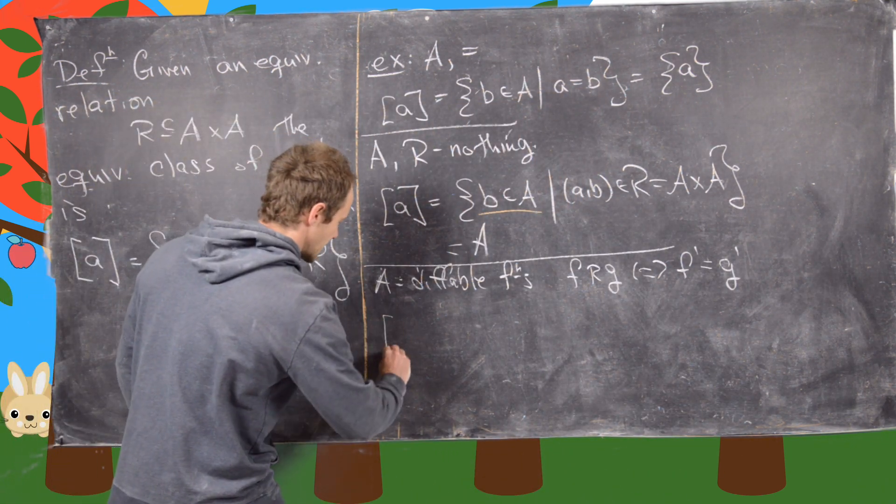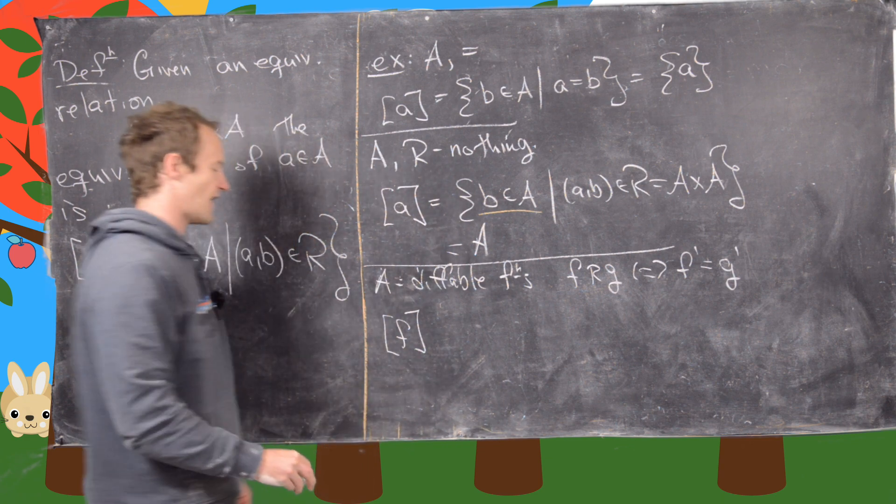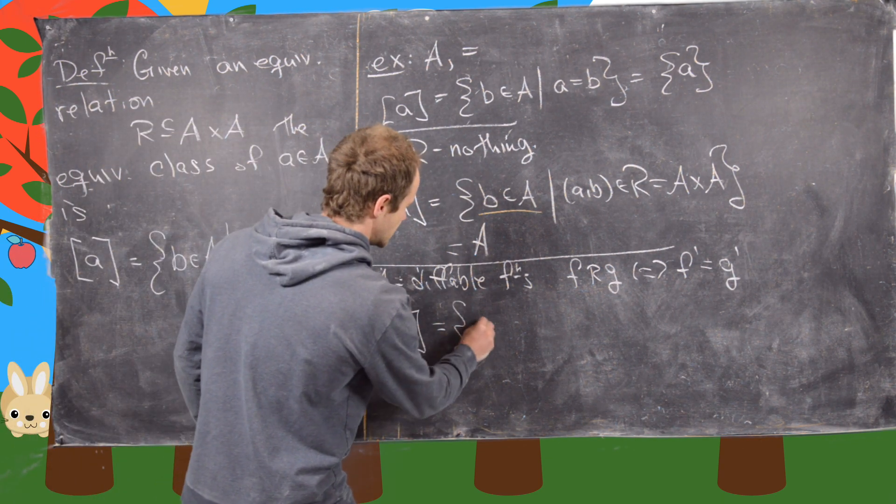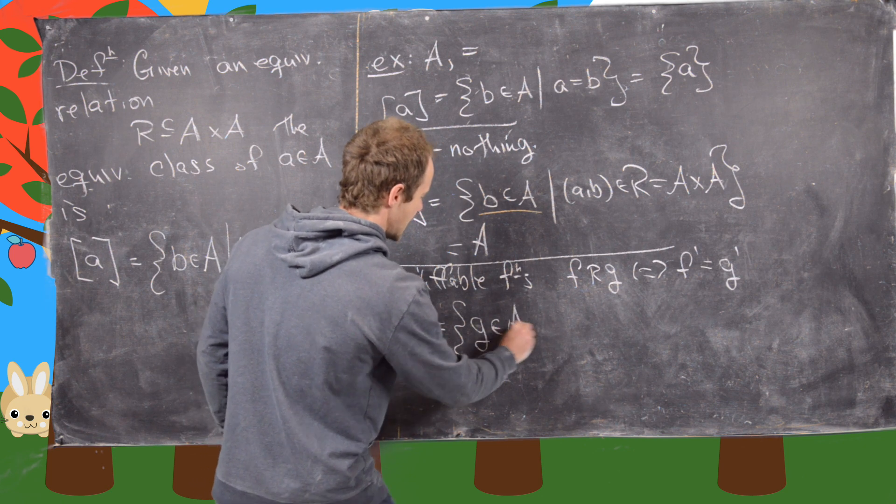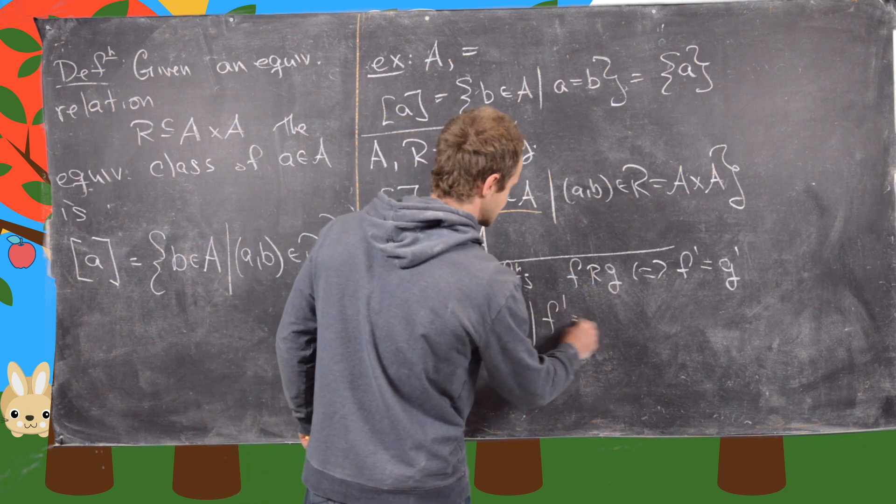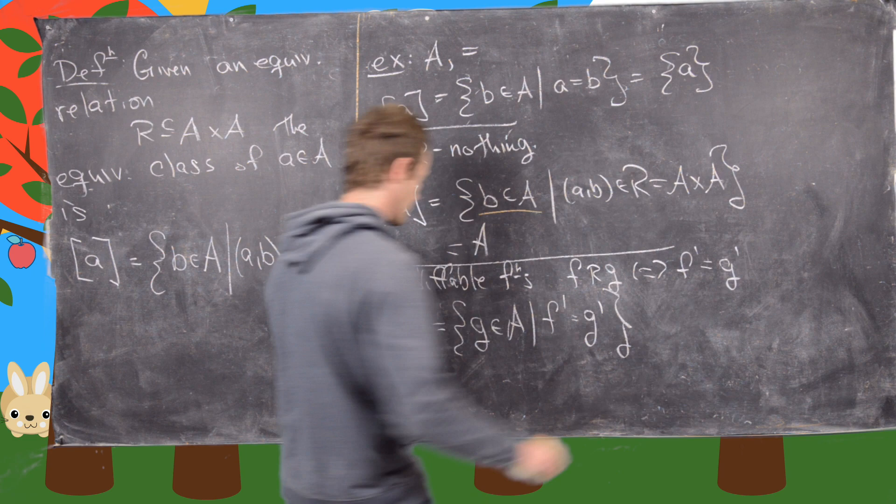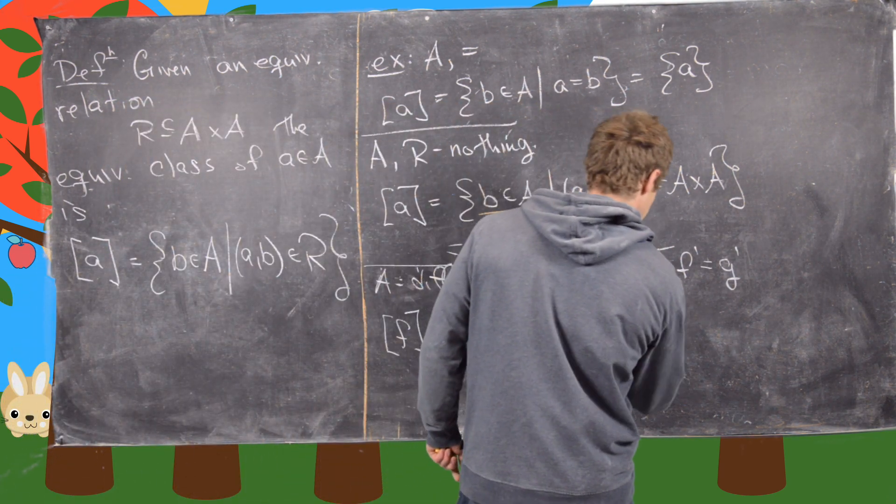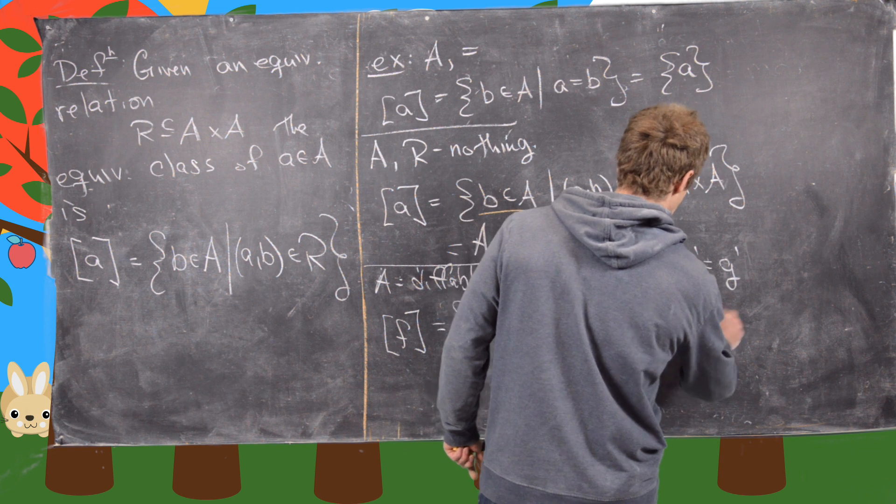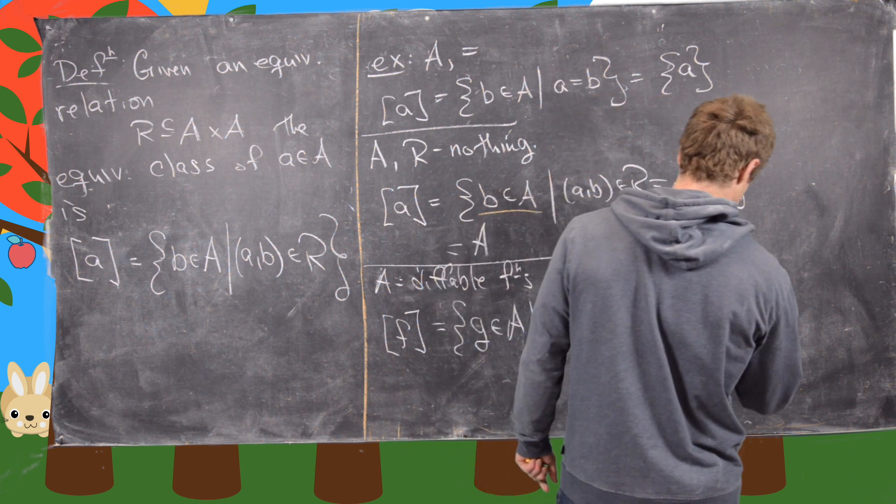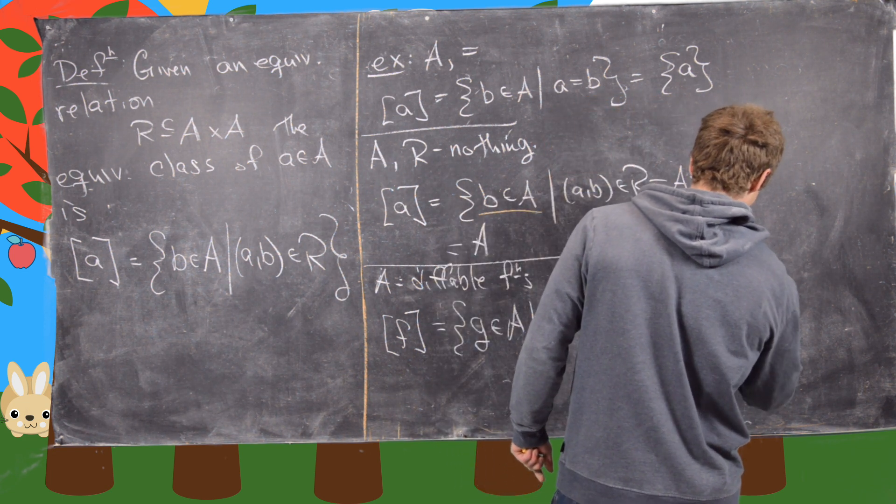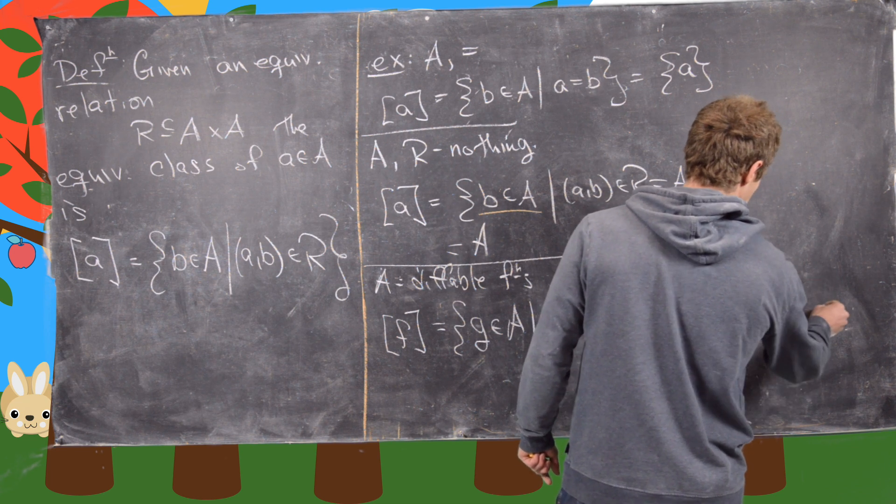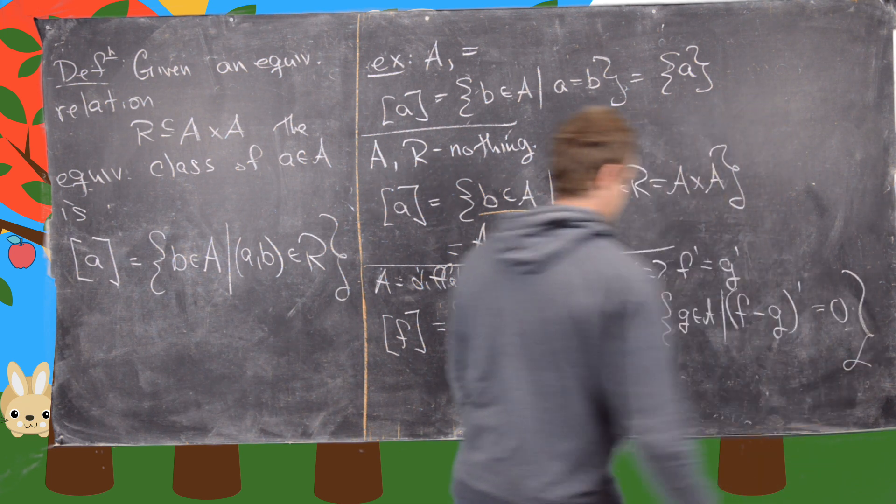And now notice we can take the equivalence class of F to be equal to all G in A where F prime is equal to G prime. But we can change that around a little bit. So notice that is all functions G in A such that F minus G quantity prime equals zero. Good.